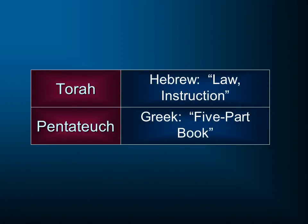The first thing we have to note is that the first five books of the Bible are known as the Torah, if you're saying it in Hebrew. That just means the law and the instruction. Or, to an English audience, we might refer to them as the Pentateuch. That just is a Greek meaning the five-part book, speaking of those first five books that comprise the Old Testament.